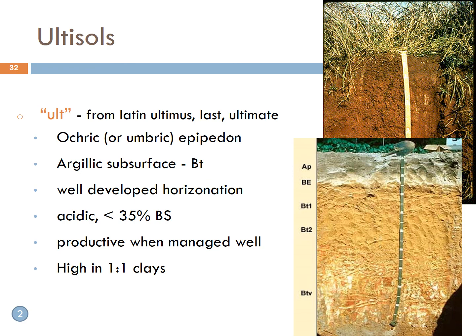Ultisols are very similar to Alfisols — ULT comes from the Latin 'ultimis,' meaning ultimately weathered. Ultisols also have subsoil clay accumulation, but they are very, very leached, very acidic, and very hard to make productive. They have less than 35% base saturation. So Alfisols and Ultisols both have subsurface Bt horizons or clay accumulation, but Alfisols are still fertile with more than 35% base saturation, while Ultisols are ultimately weathered with less than 35% base saturation — almost the same soil order, but one is more productive and one is less.